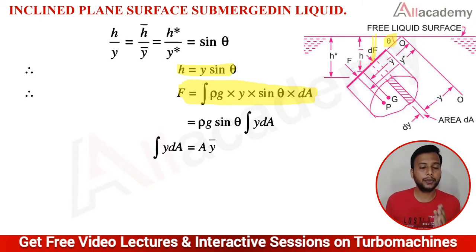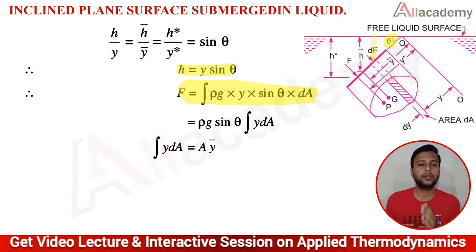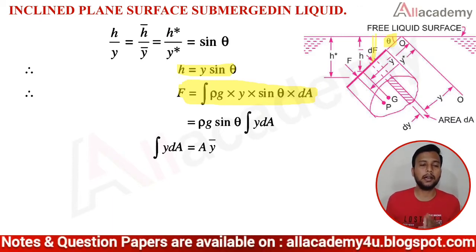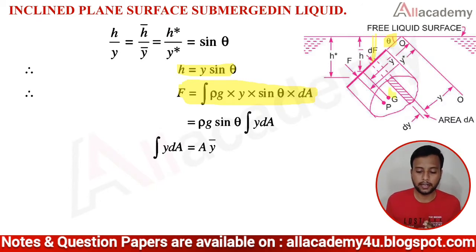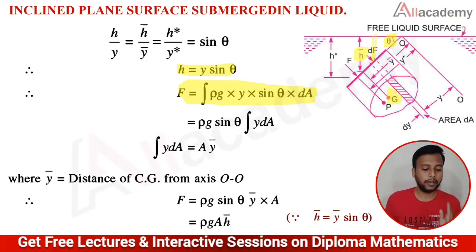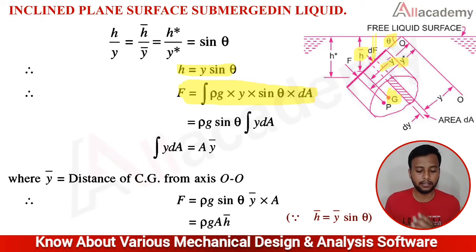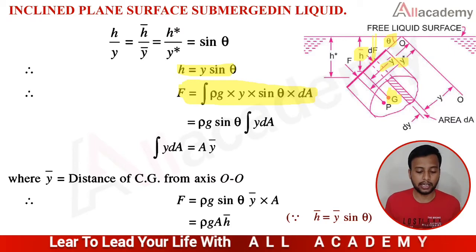Now ∫Y dA is nothing but A × Ȳ — that is, the area multiplied by the distance from the free surface to the center of gravity. So we can replace the integral ∫Y dA with AȲ̄.